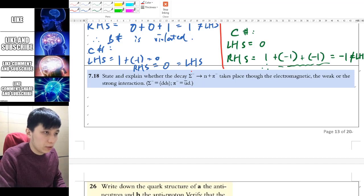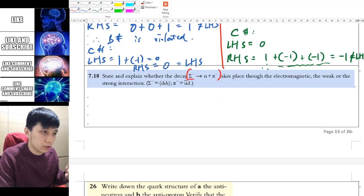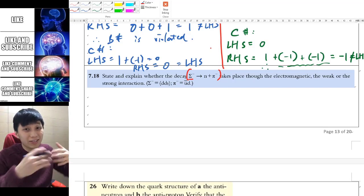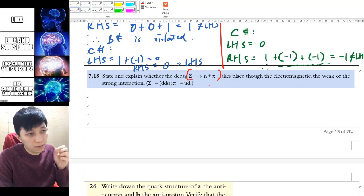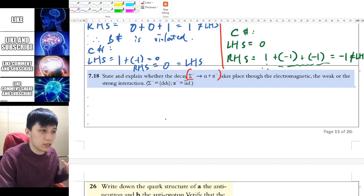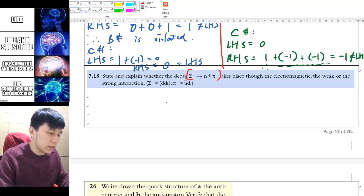Alright, so here is an example for you. You have given a reaction which turned this one, which is called sigma, which is a certain hadron, then turned into neutron and pion. And they ask you whether or not it is through electromagnetic, weak, or strong interaction. And so one way that you can do it is by looking at its strangeness.